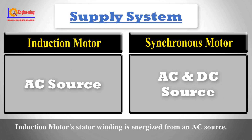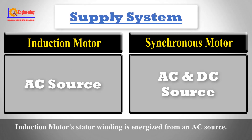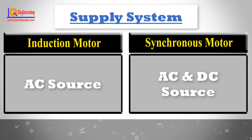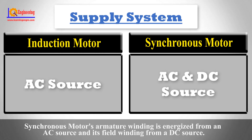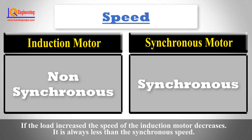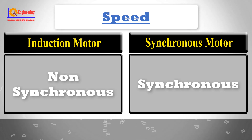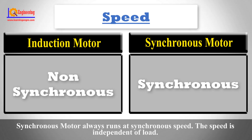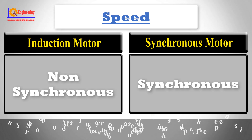An induction motor's stator winding is energized from an AC source. If the load is increased, the speed of the induction motor decreases and it is always less than the synchronous speed. A synchronous motor always runs at synchronous speed; its speed is independent of load.